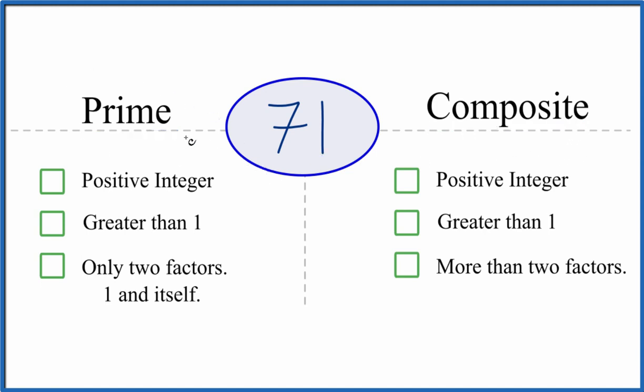So for a prime number, that needs to be a positive integer. This is a whole number here. So yep, we have our positive integer. Is it greater than 1? Yeah, 71 is greater than 1.